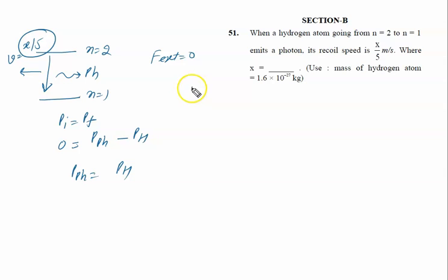Momentum of the photon equals momentum of the hydrogen atom. For the photon, E=pc, so p is given by E/c. Momentum of the photon is E/c or ΔE/c. Momentum of the hydrogen atom is mass times velocity, so recoil speed is given by ΔE/(mc).